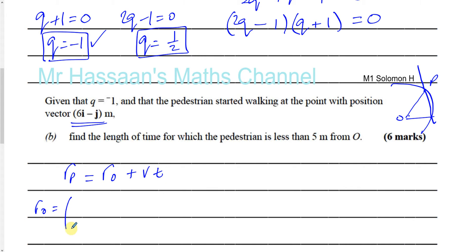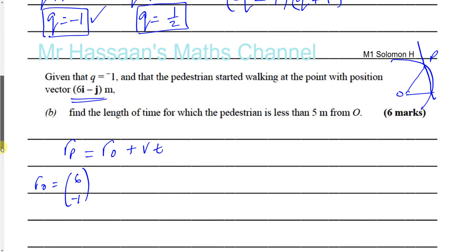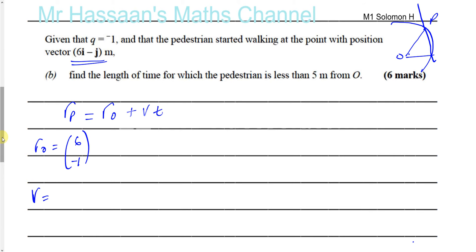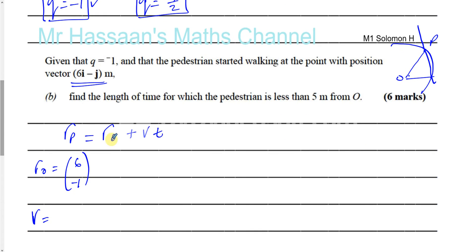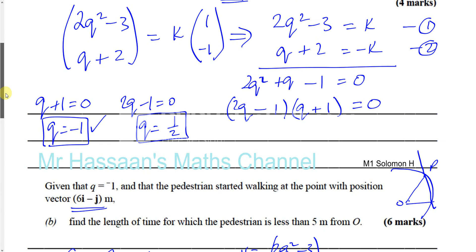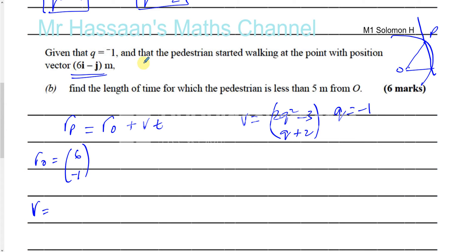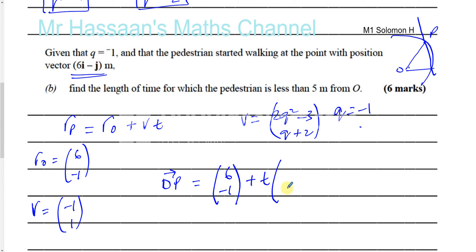We know R₀ is given as 6i - j, so that's (6, -1). The velocity vector V is (2q² - 3, q + 2). When q = -1: 2(-1)² - 3 = 2 - 3 = -1, and -1 + 2 = 1. So the velocity vector is (-1, 1). The position vector of the pedestrian O to P equals (6, -1) + t(-1, 1), which can be written as (6 - t, -1 + t) or (6 - t, t - 1).